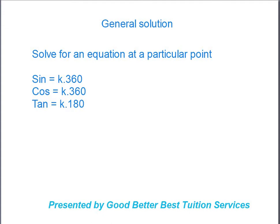Today we're covering general solution, which is about solving for an equation at a particular point. For sine, it's always k×360° because 360° is how long the sine graph takes to complete itself. Cosine also takes 360°, so that's also k×360°. Some of you might use n×360° — that's also fine. The tan graph has a period of 180°, so that's k×180°.